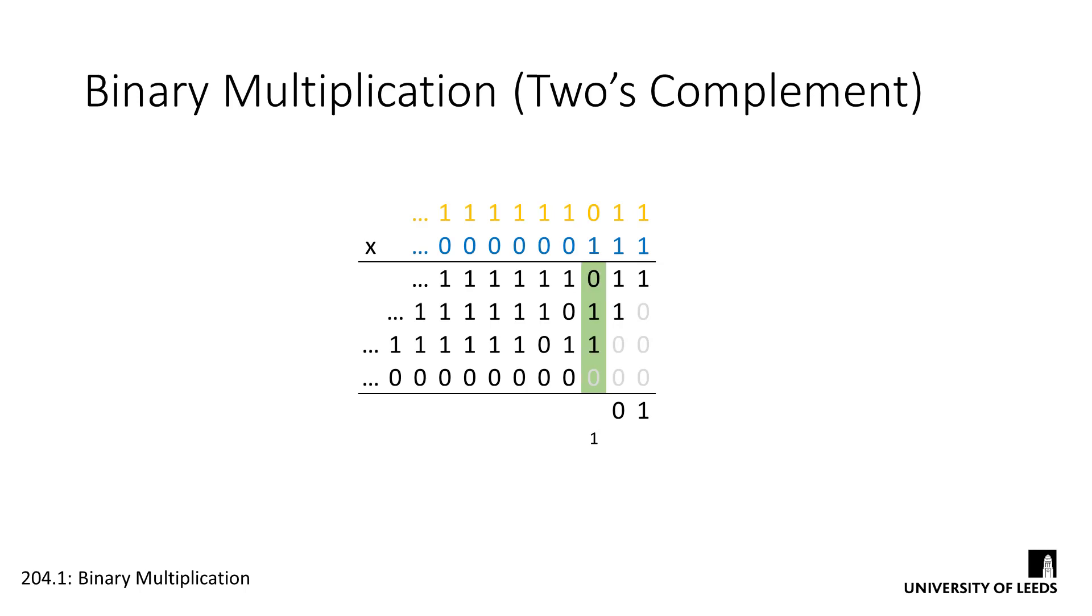And so taking the third column into account, we can see that we've got two ones in this column already, which gives us a subtotal of 1, 0. But we've also got to take this carried 1 into account as well, which changes that to 1, 1. And again, we need to sort out our carries. So we'll leave 1 in that column and carry the 1 into the next column.